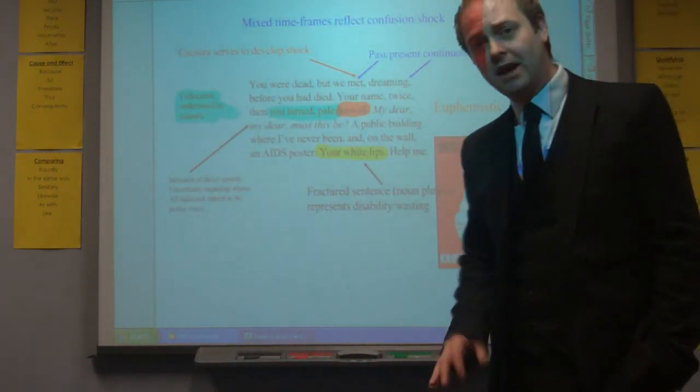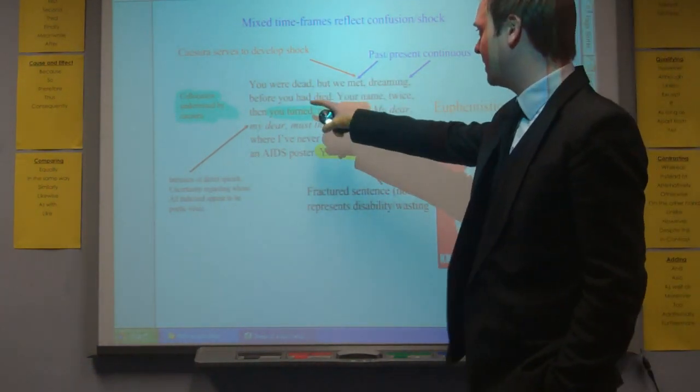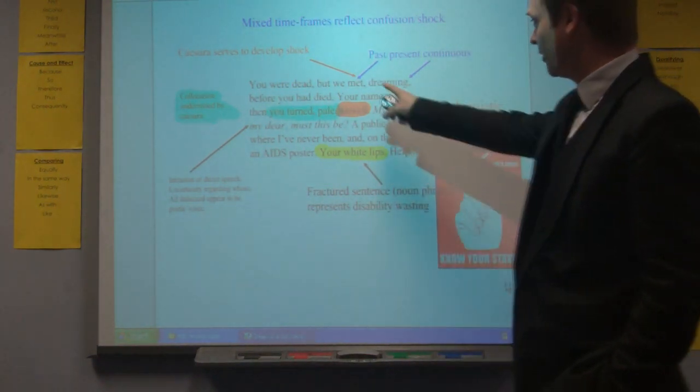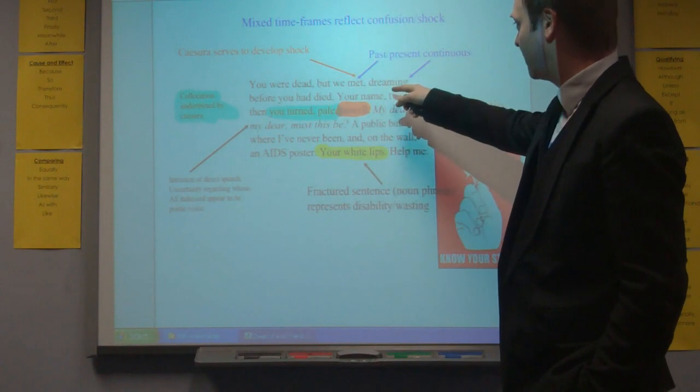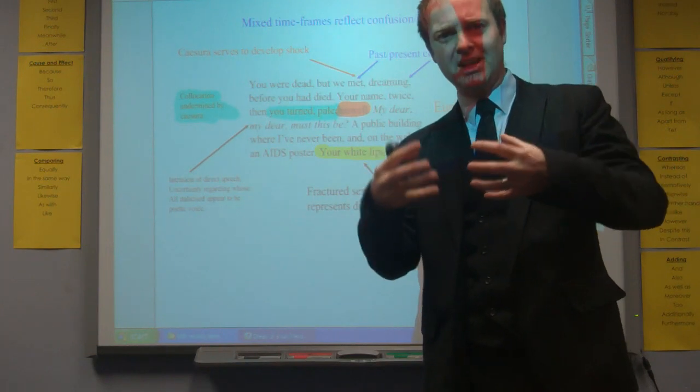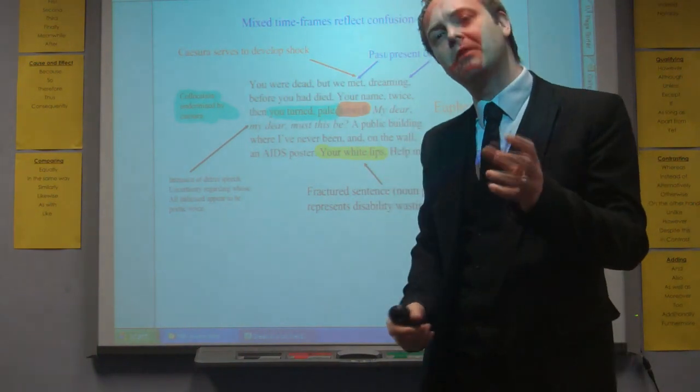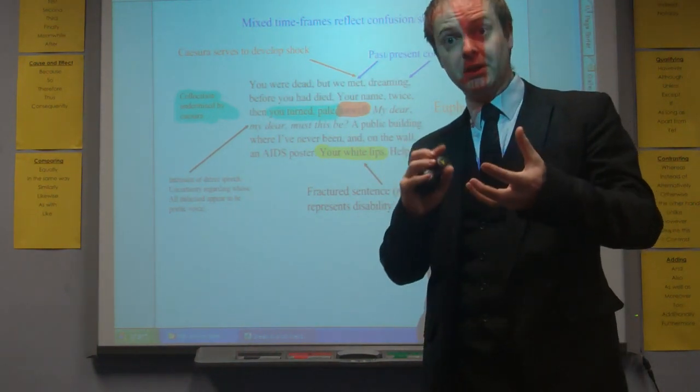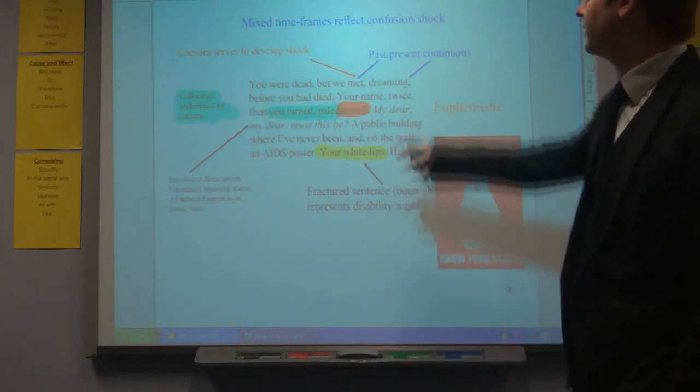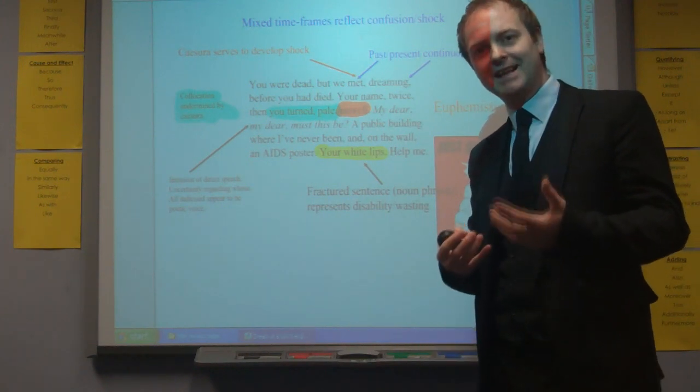In terms of time, they feature quite heavily in the poem. If you have a look at the first sentence, you were dead but we met dreaming before you had died. There's a confusion of tenses there. We've got the past tense verb met followed by dreaming in the present continuous. So those two verbs are juxtaposed in a way in which they clash and seem awkward. The past and the present are confused, and that can reflect the confusing mixing of the dream state and reality. So the person that she's meeting, the friend, is dead but is being met in this dream in the present.